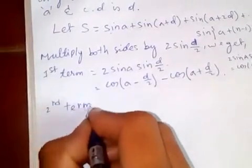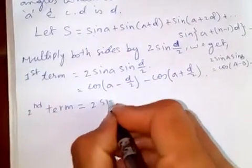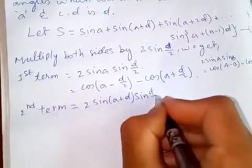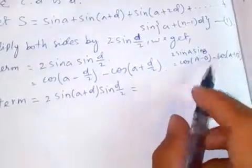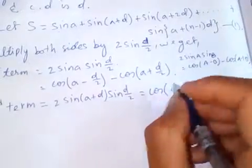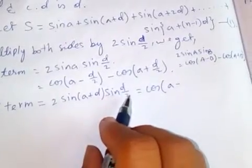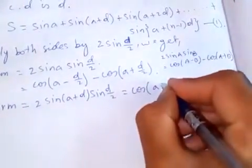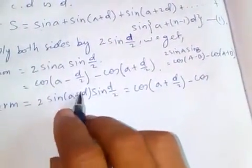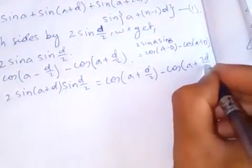For the second term: 2 sin(A plus D) times sin(D over 2). Applying the same formula, we get cos(A plus D minus D over 2), which simplifies to cos(A plus D over 2), minus cos(A plus D plus D over 2), which simplifies to cos(A plus 3D over 2).